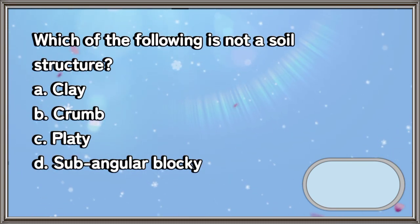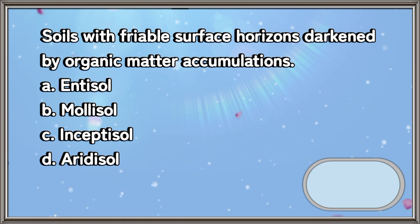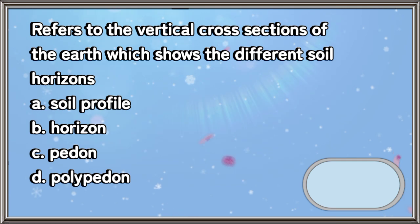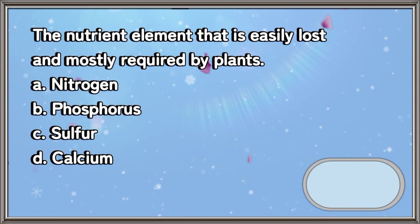Which of the following is not a soil structure: a) clay, b) crumb, c) platy, d) subangular blocky. The answer is letter A. Soils with friable surface horizons darkened by organic matter accumulations: a) entisol, b) mollisol, c) inceptisol, d) aridisol. The answer is letter B. Refers to the vertical cross section of the earth showing the different soil horizons: a) soil profile, b) horizon, c) pedon, d) polypedon. The answer is letter A.